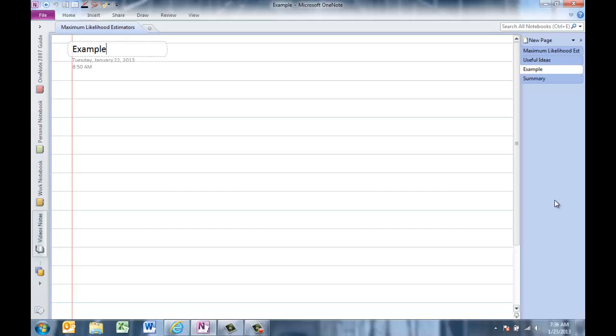This is part two of a two-part lesson on maximum likelihood estimators. In this part, I'd like to do an example. We'll start with a discrete probability example.